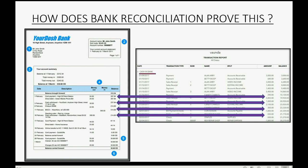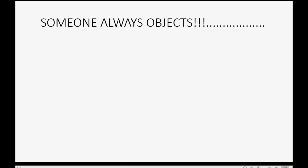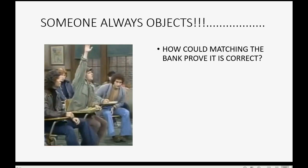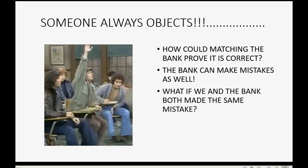Now when I say this to my students, someone always objects. Someone always says, wait a minute — how could matching the bank prove that it is correct? The bank can make mistakes as well. What if we and the bank both made the same mistake? Well, it is a good point that the bank could also make a mistake, and I have had previous students who actually worked doing bank reconciliation and they did report that banks do periodically make mistakes that affect the bank reconciliation process.